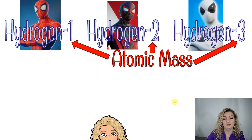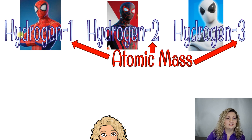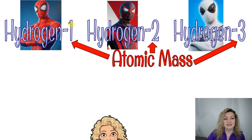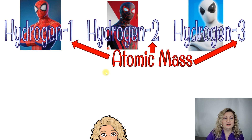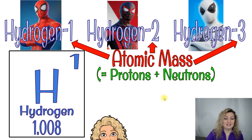Looking at this example, we have three different Spider-Mans representing Hydrogen-1, Hydrogen-2, and Hydrogen-3. These are all isotopes of Hydrogen. This number at the end represents the atomic mass of that particular isotope, so every single one is going to have a different atomic mass. If you remember how to calculate the atomic mass, it's the protons plus the neutrons.